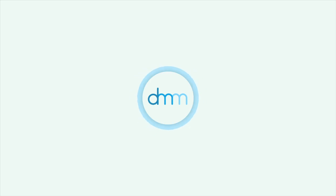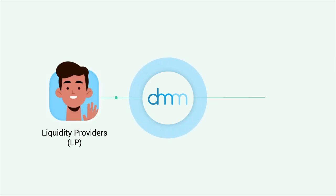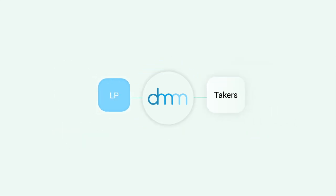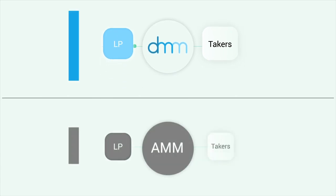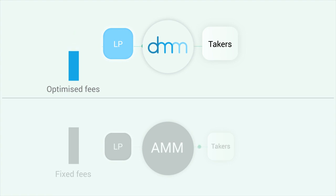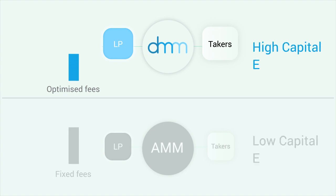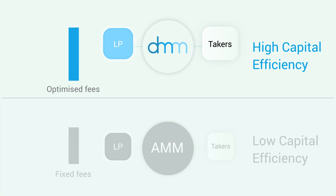Let's learn about the Kyber Dynamic Market Maker, or DMM, and the important benefits it brings to liquidity providers and takers. Unlike the static nature of most liquidity models in the DeFi space, Kyber DMM is the first protocol designed to react to market conditions in order to optimize fees for liquidity providers, while providing high capital efficiency based on the nature of the token pair. This is achieved through two novel mechanisms.